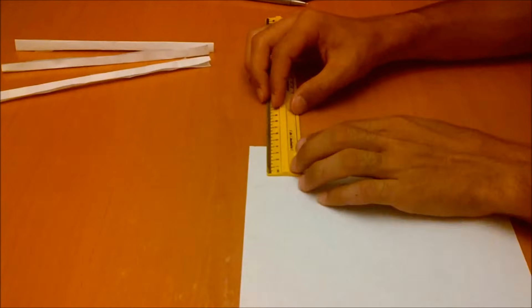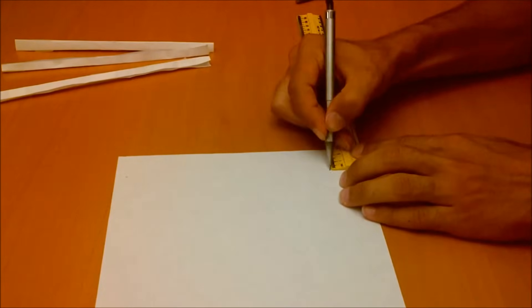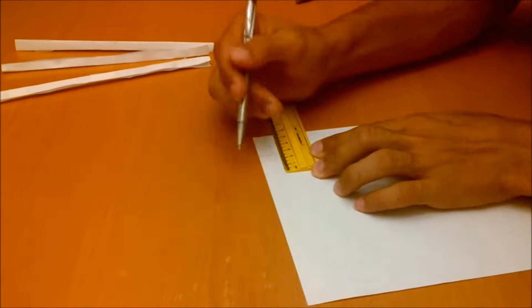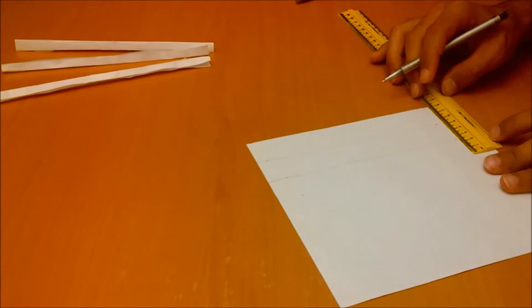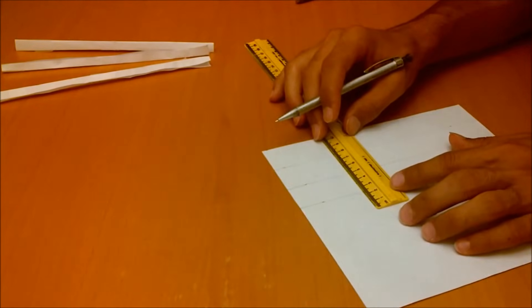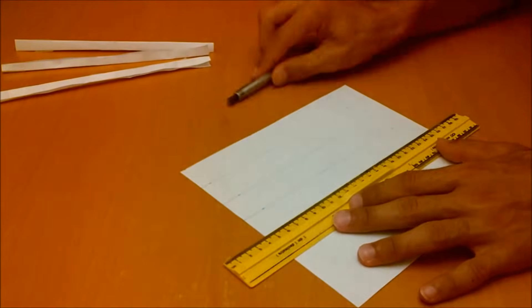Now to create the base of the paper tower, you'll need four strips of paper. These can be roughly the same size; it doesn't matter so much here.